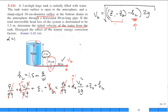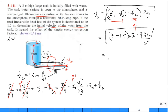The head loss reduces the flow. Plugging in: Z₁ − Z₂ = 3 m, hL = 1.5 m, g = 9.81 m/s². V₂ = √[(3 − 1.5) × 2 × 9.81] = √(29.43) ≈ 5.425 m/s. The friction robs half the available head, reducing the discharge velocity.